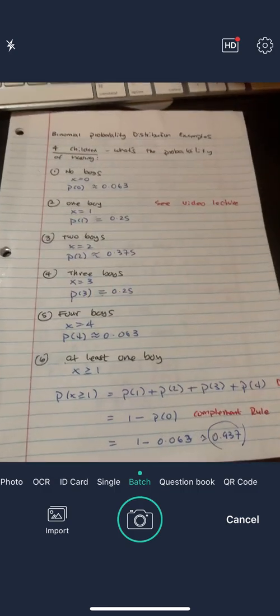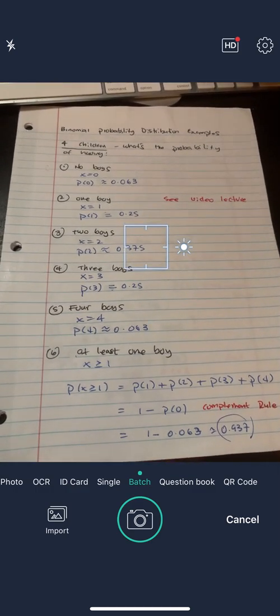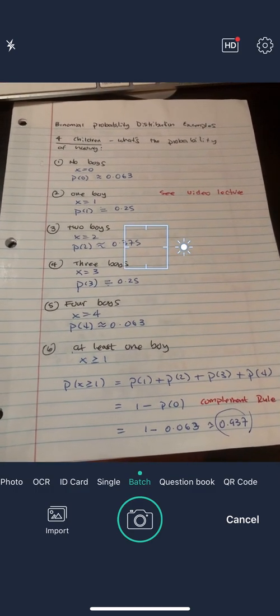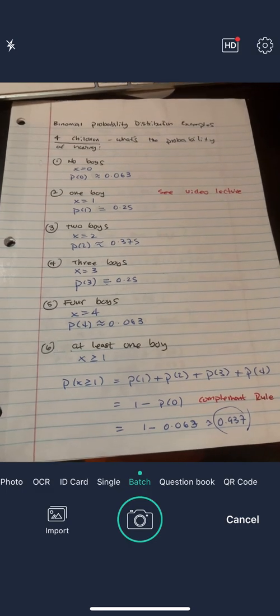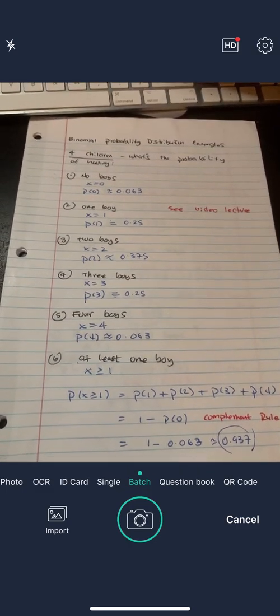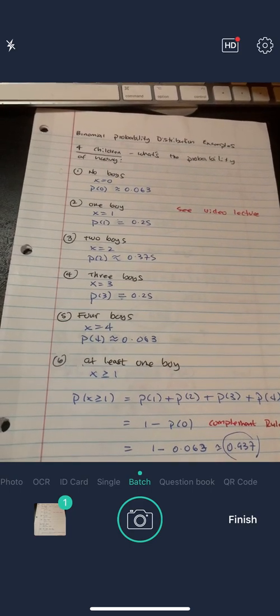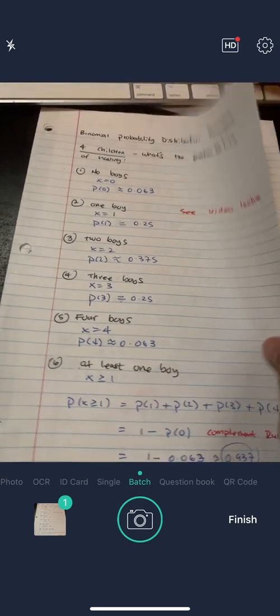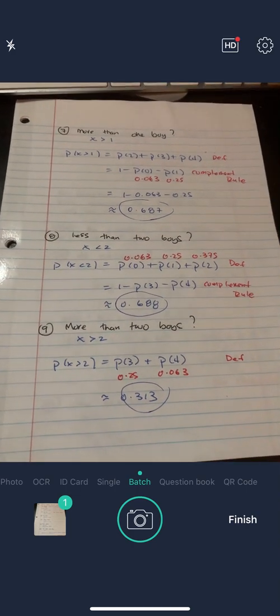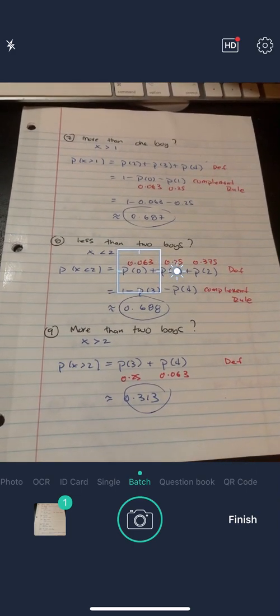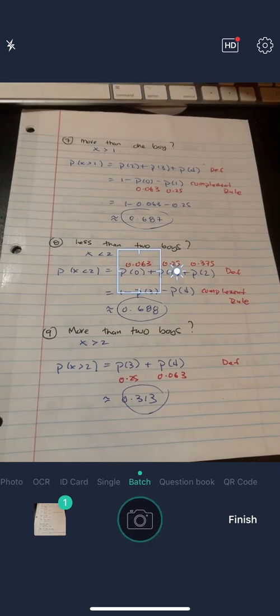So I'm going to center my camera, I'm going to focus, make sure it's focused. You don't want to submit blurry work, we can't read that, and then hit the picture. Okay, now go to the next page, make sure it's focused, it's not blurry, hit the picture.